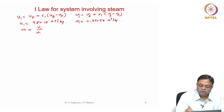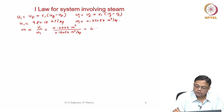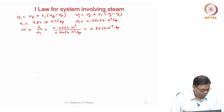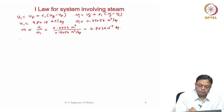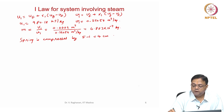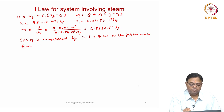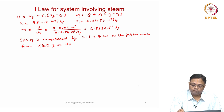Mass of water = V1 / v1 = 0.0002 / 0.29054 = 6.883 × 10⁻⁴ kg. The spring is compressed by 5 − 1 = 4 centimeters as the piston moves from state 1 to state 2.